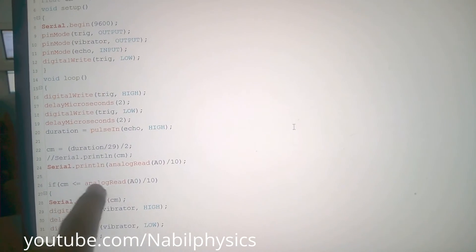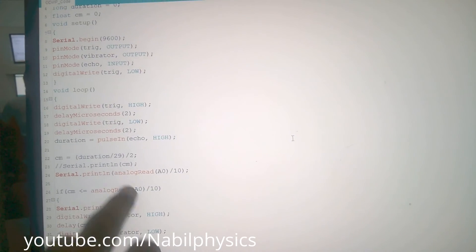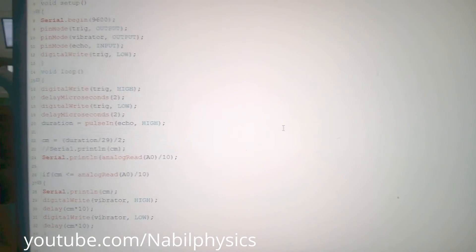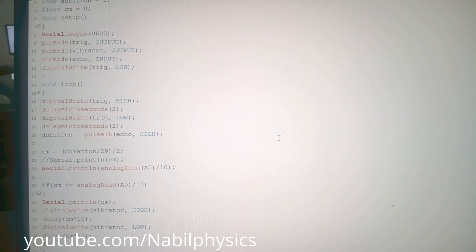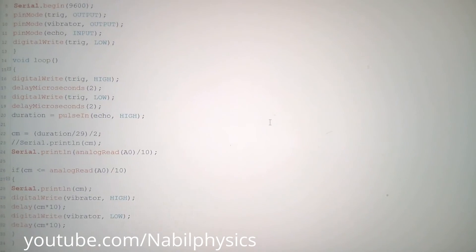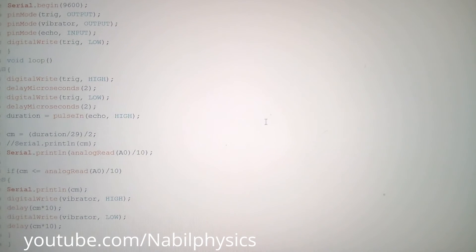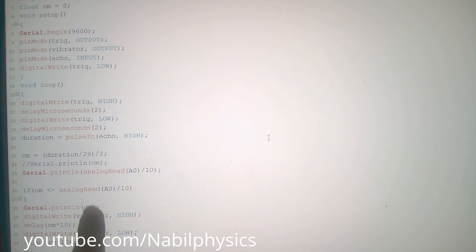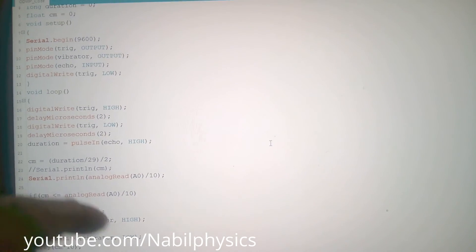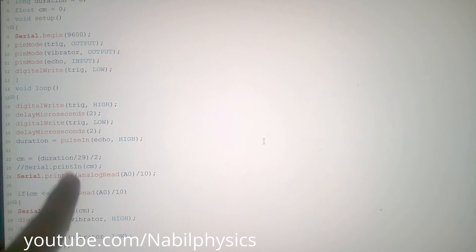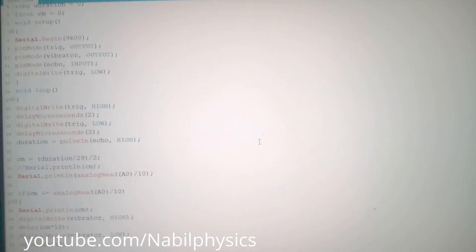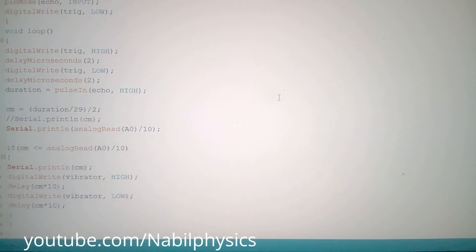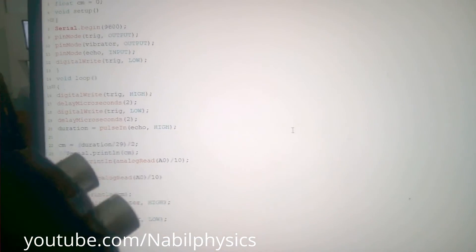Here is the extra capability by which you can calibrate or adjust the distance from where this device should detect object and vibrate. That is why we use here analog read. Just with a 10K potentiometer you can adjust the distance, the starting distance from where this device starts to detect its object.